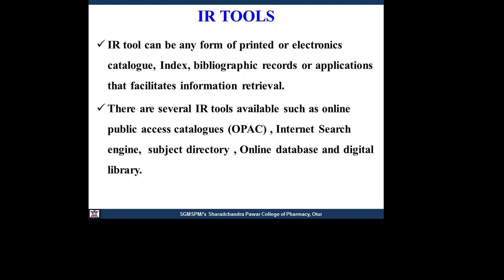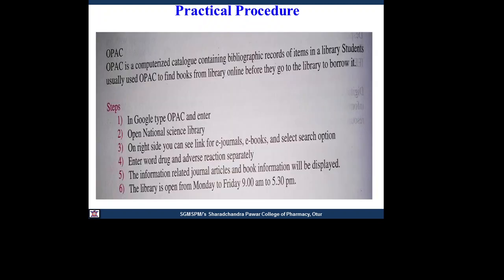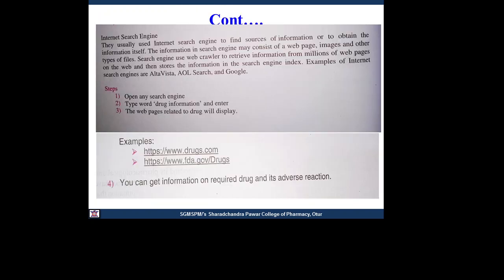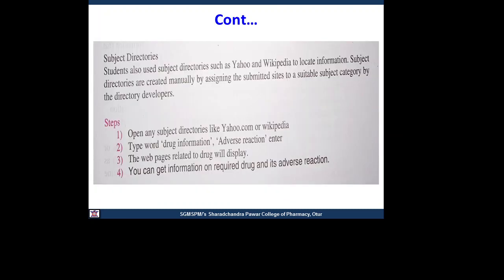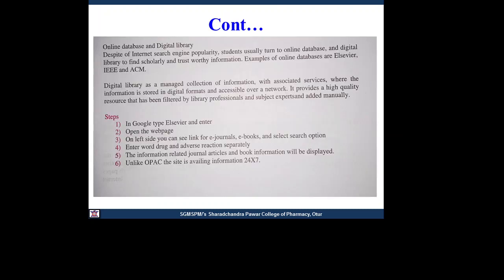This includes electronic catalogs, indexes, records, and applications. Such types of information you can retrieve from these IR tools. In the practical procedure, first you find different information from the OPAC, then on a search engine, then on subject directories, then online databases, and digital libraries.